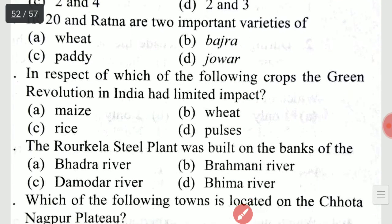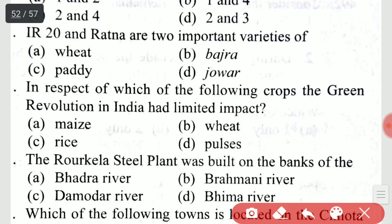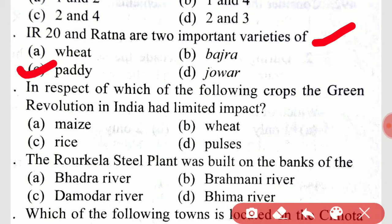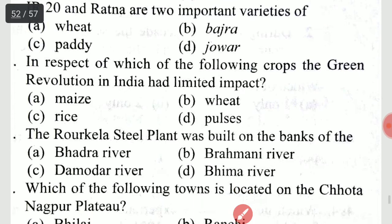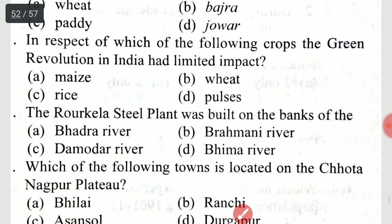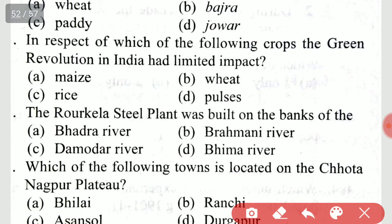IR 20 and Ratna are two important varieties of paddy. In respect of which of the following crops did the green revolution in India have limited impact? That is option D, pulses.